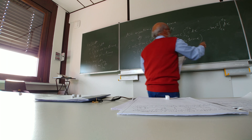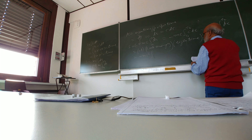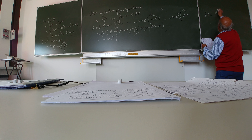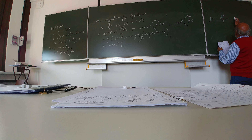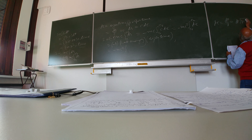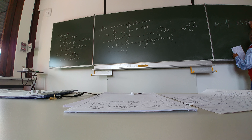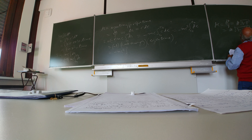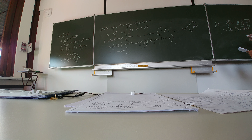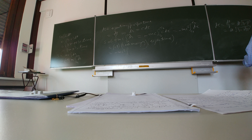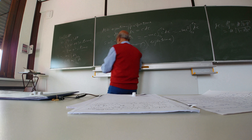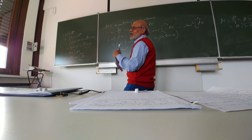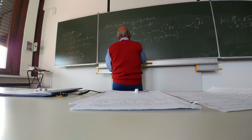Now d tau is dt divided by gamma, which is dt times the square root of 1 minus v squared by c squared — this is the conventional notation. So putting this in, this becomes minus mc squared, averaged over t from t_i to t_f, where this t is not eigentime.